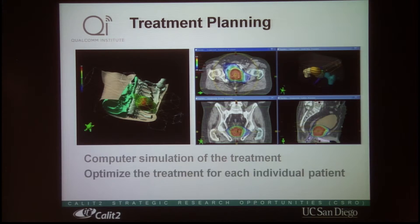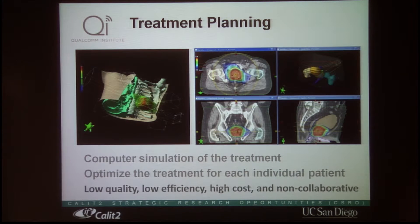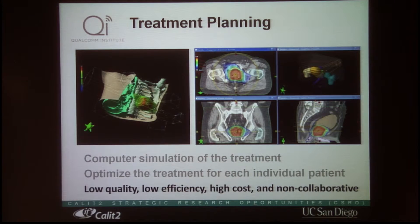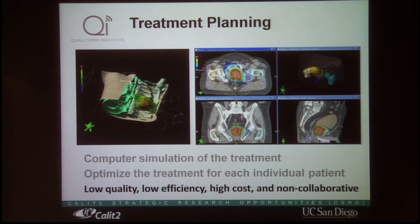This is very computation-intensive and not very efficient right now. It can take a few days just to produce the plan, and then the physician needs to make adjustments to the parameters, so the whole process may take one or two weeks. After a couple of weeks, patients sometimes lose weight, so their body shape changes and organ positions may also change.